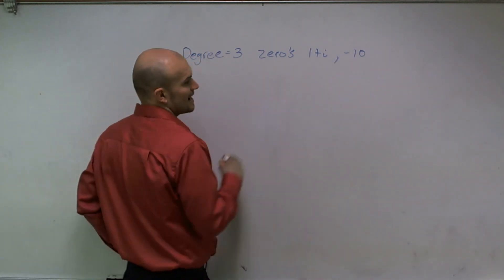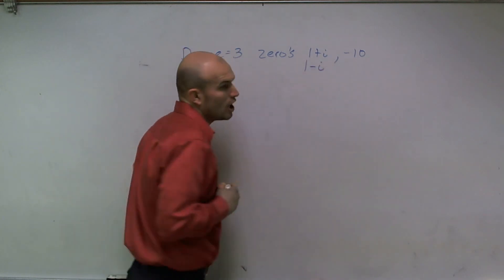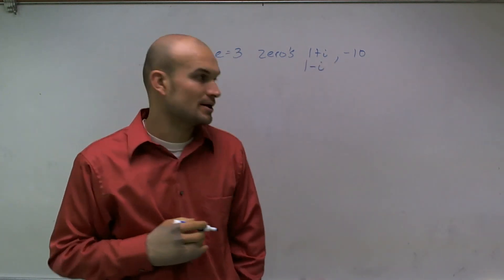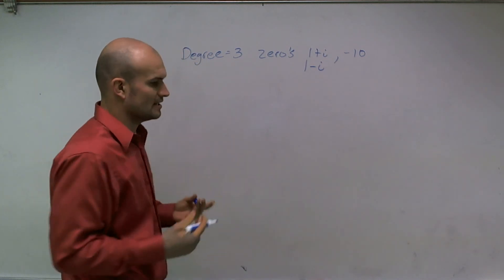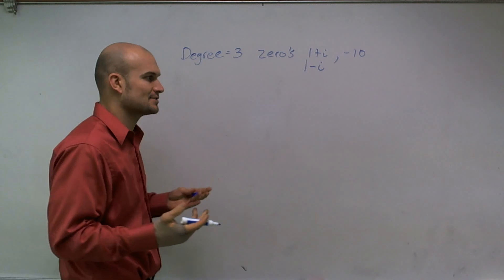So if 1 plus i is a zero, 1 minus i is also going to be a zero for my polynomial. Now, the next thing you need to remember is how do zeros, factors, and polynomials all relate to each other?